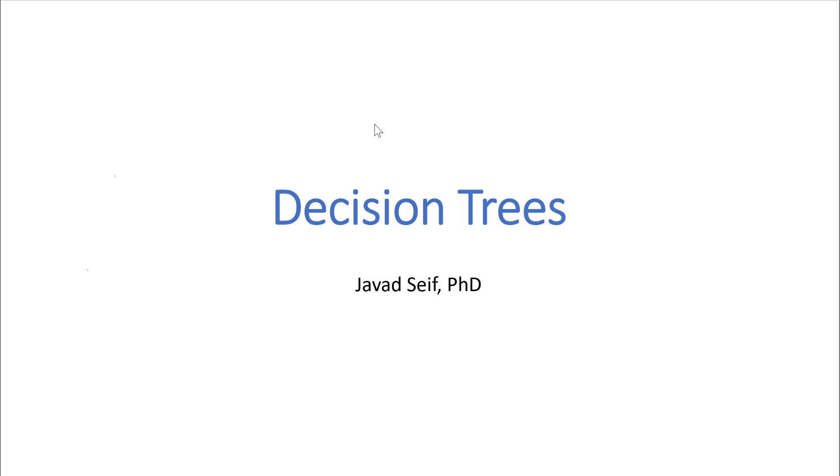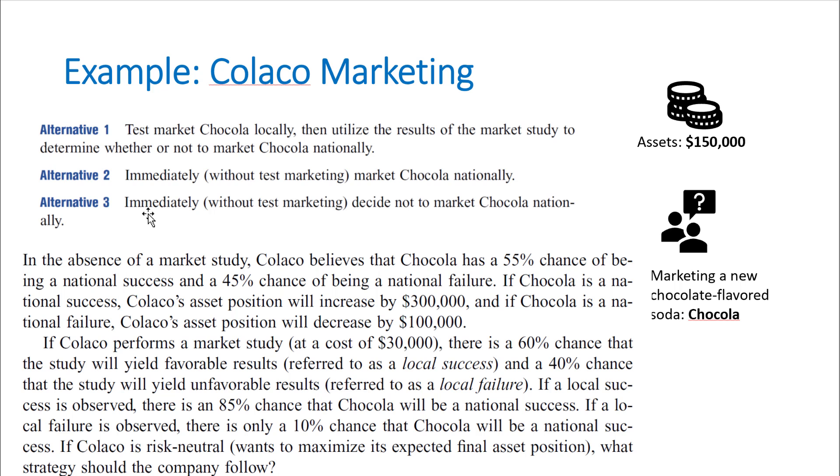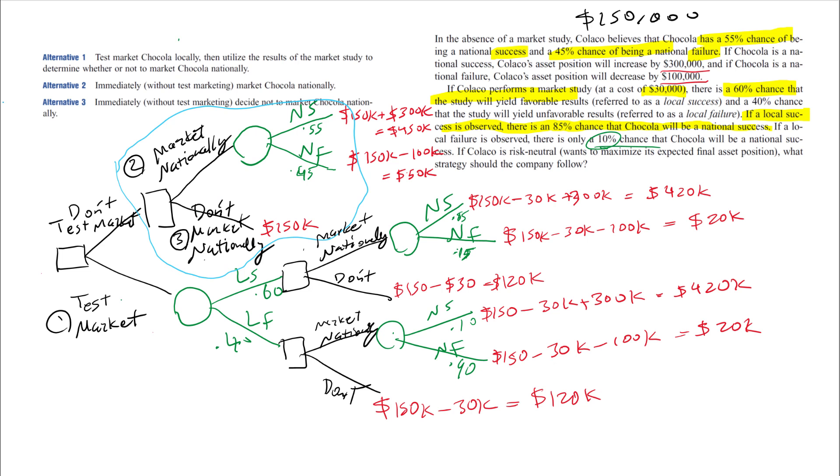Hello and welcome to this discussion about decision trees. We already saw an example and how to construct a decision tree for that example. Next we want to see how we can actually do some calculations to choose the best decision. Here we calculated the rewards at the terminal branches.